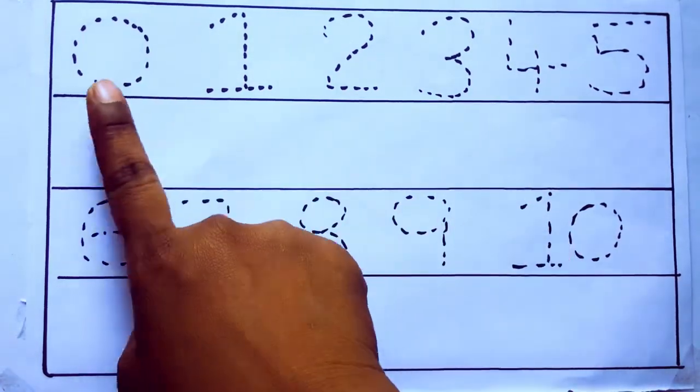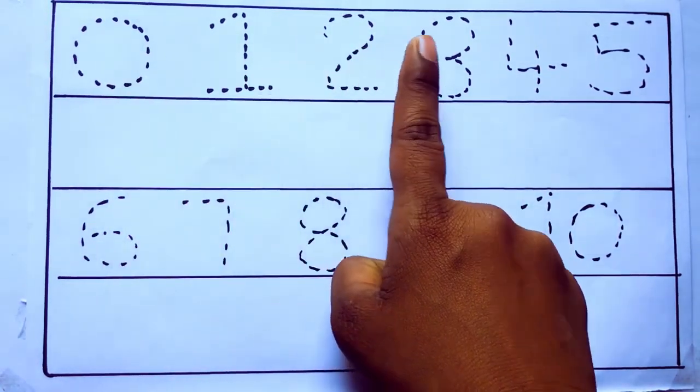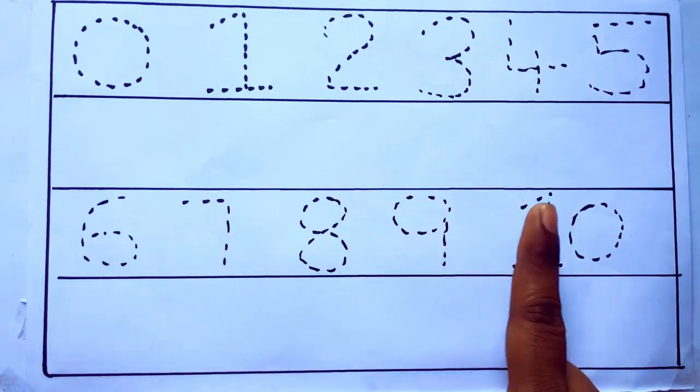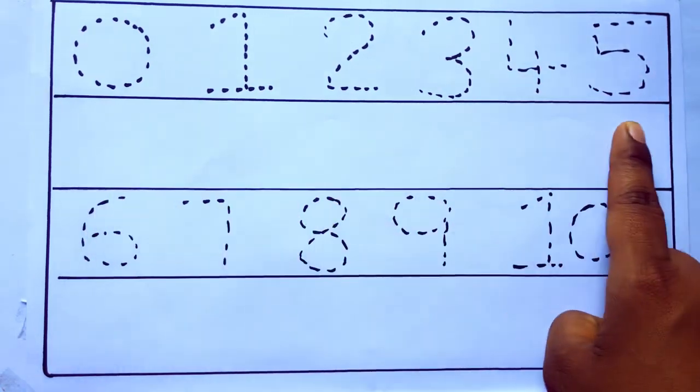0 to 10: 0, 1, 2, 3, 4, 5, 6, 7, 8, 9, 10 and rewriting the numbers.